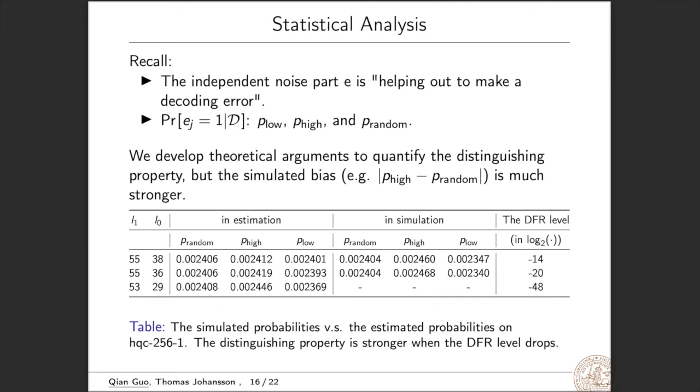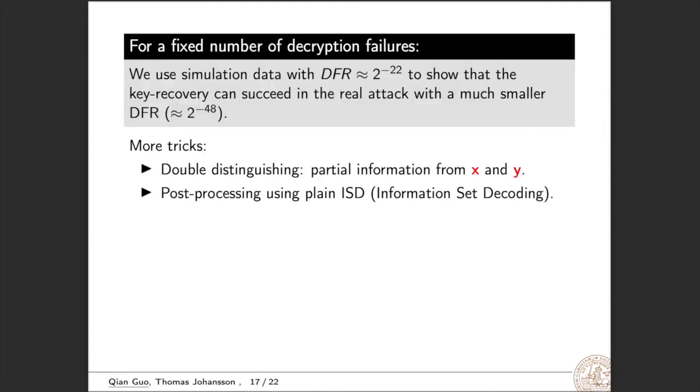This also matches the intuition because if it is very difficult to get one decryption failure, then this decryption failure will contain much more information. The problem is then to know how many decryption failures are sufficient for key recovery when DFR is very low, say of size about 2 to minus 50. Our solution is to run simulation as large as possible. For instance, we use simulation data with DFR about 2 to minus 22. If we can do key recovery for fixed number of decryption failures with the same number of decryption failures, we can do key recovery in the real attack with a much smaller DFR.